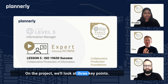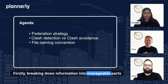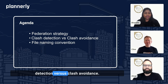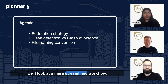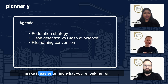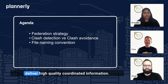We'll look at three key points. Firstly, breaking down information into manageable parts by using a clear federation strategy. Then we'll look at clash detection versus clash avoidance — so instead of finding thousands of issues, we'll look at a more streamlined workflow. And finally, we'll look at file naming conventions that make it easier to find what you're looking for. These are just some of the building blocks that help teams stay aligned and deliver high-quality, coordinated information.